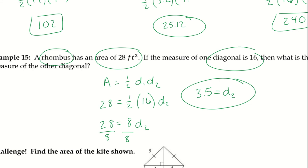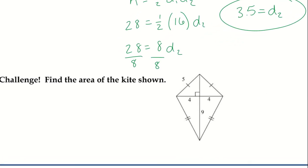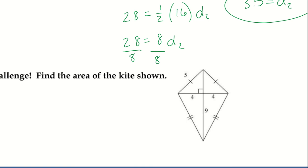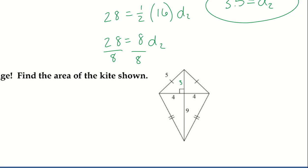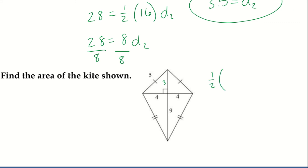Even when we're given the area, we use inverse operations to work backwards and find missing parts. For the challenge problem — finding the area of a kite — we identify a 3-4-5 right triangle, giving us the missing diagonal. Then area = ½ × 12 × 8 = 48.